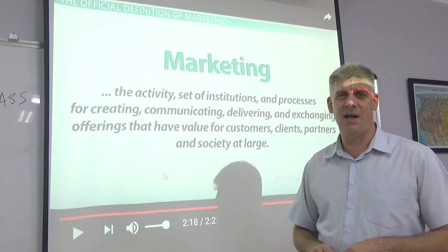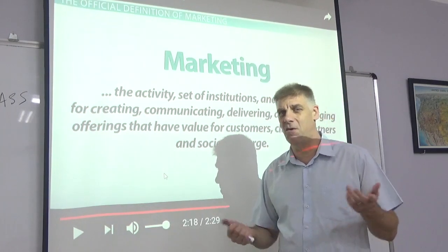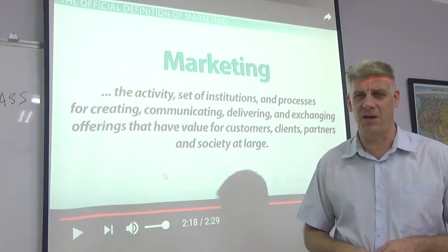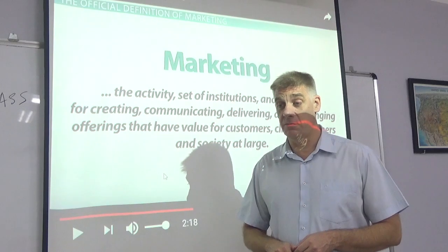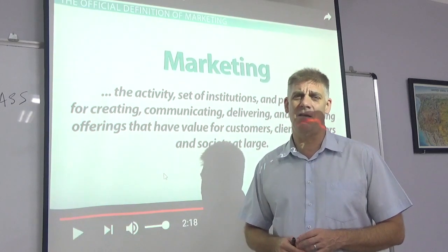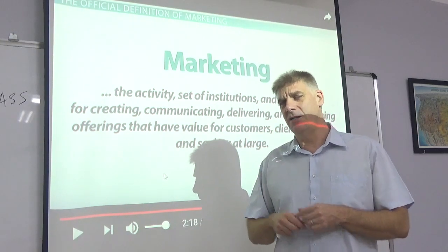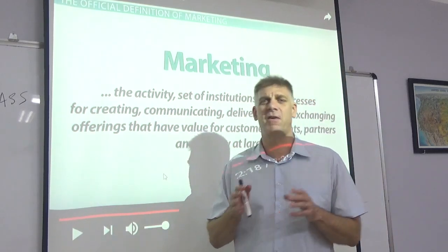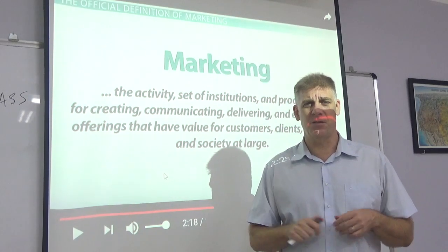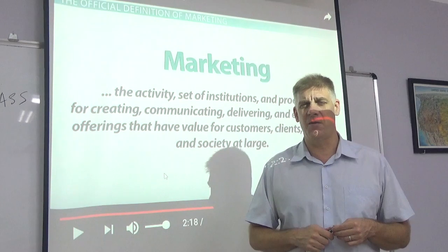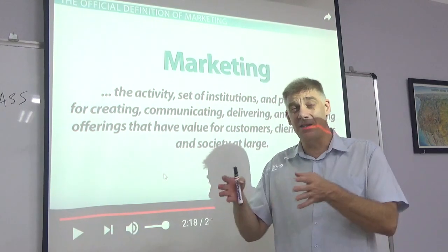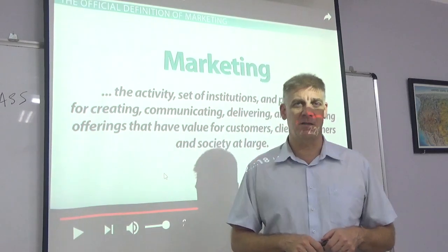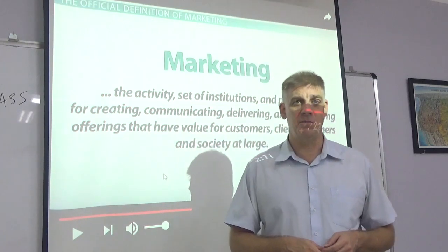A mass market product — shampoo, toothbrushes — you can see how much companies try to differentiate themselves and create differences between products that are sometimes very small or not real at all. They look a little different, or they're from a different country, or they have some special shape. Even though everyone uses a toothbrush, companies try to create differences to make us feel there are big differences. So even in mass market products, there are some different target markets — luxury brands, cheap brands, for example.